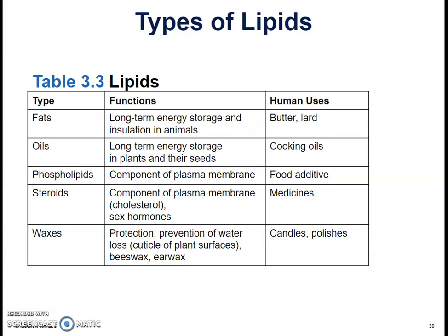The main types of lipids are fats, which are long-term energy storage and insulation in animals, and we humans use them as butter or lard. Oils are also used for long-term storage, but in plants and their seeds, and we use these a lot of times for cooking. Phospholipids are part of our cell membranes, and they're really important to our lives, because without them our cells would not have a barrier — we'd just be a puddle of goo.